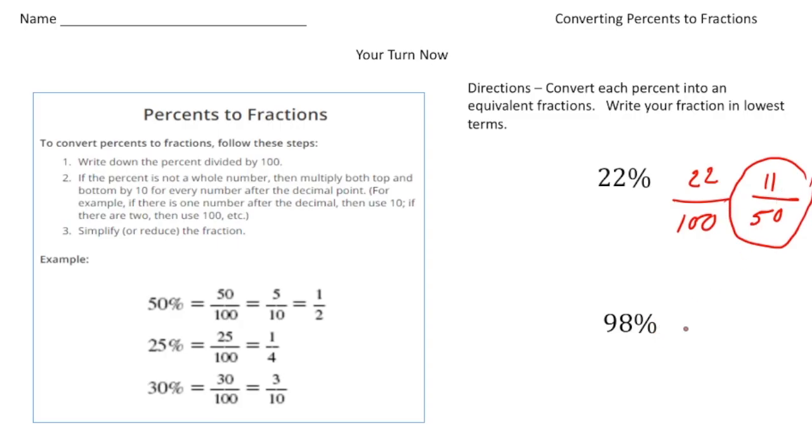Let's try this one. 98%. So I'm going to write that as 98 over 100. And because 98 is an even number, so is 100, I'm going to divide them by 2. That's going to be 49 over 50. And that is reduced. So 98% equals 49 over 50. How'd you do?